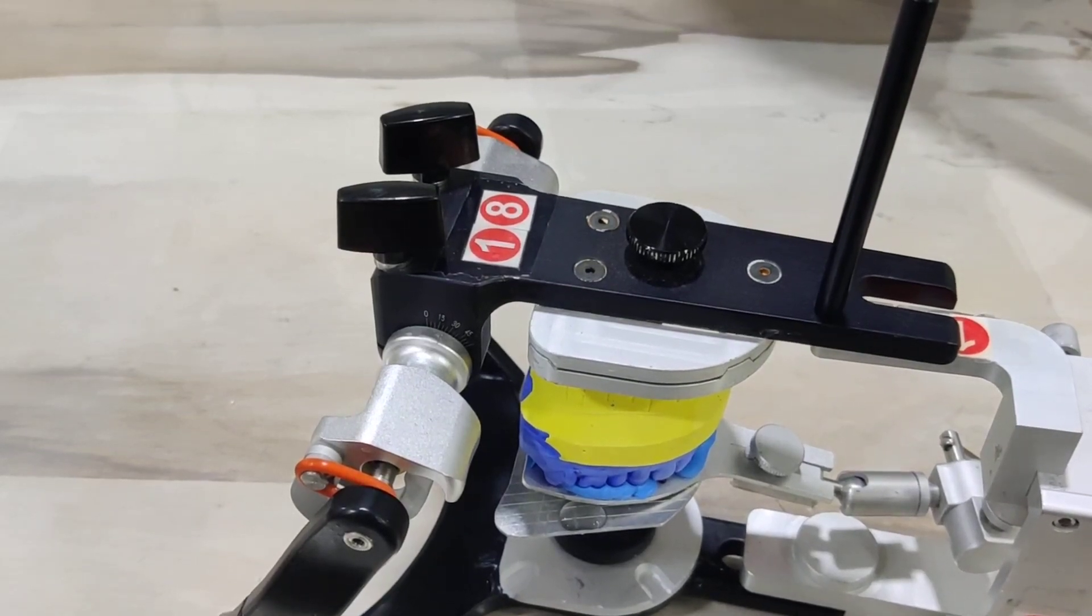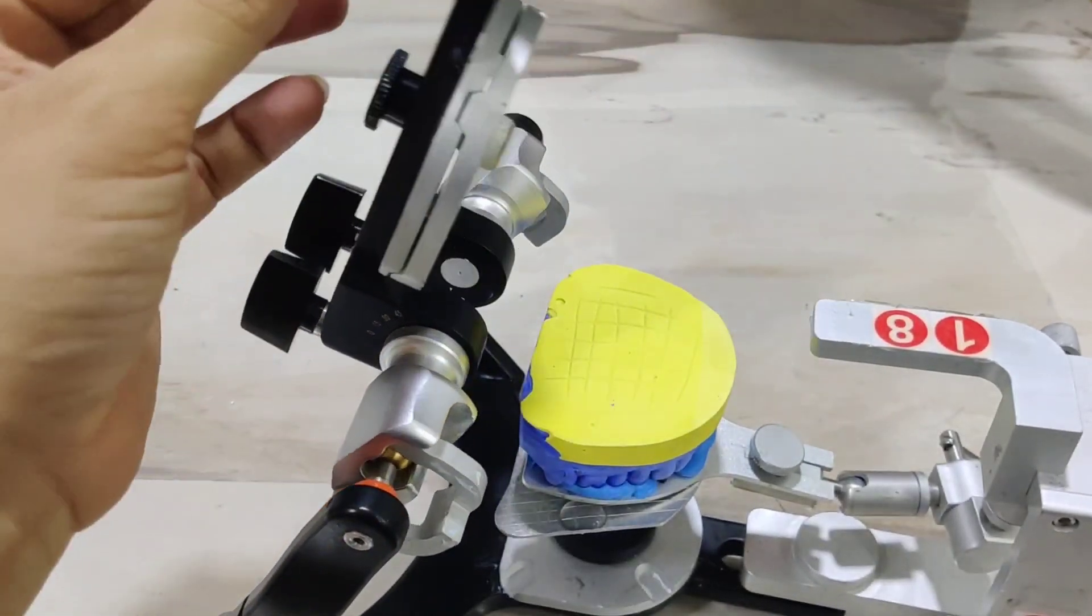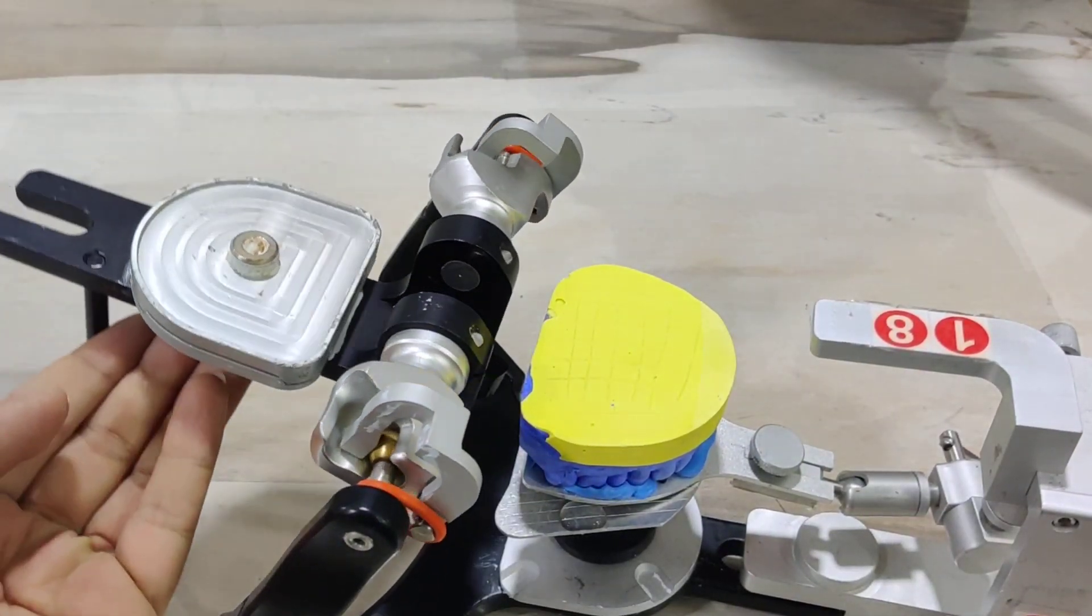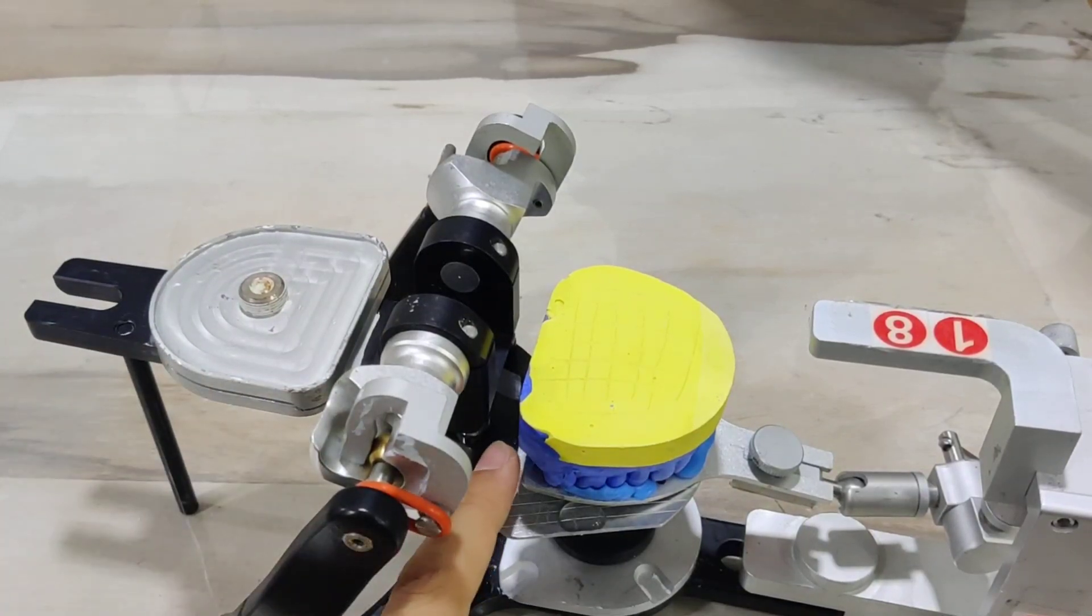When we are ready for the maxillary mounting, it helps to connect this pin here. This is available with the system and creates a static stop at the back, making sure the back end of the articulator does not disturb the maxillary cast.